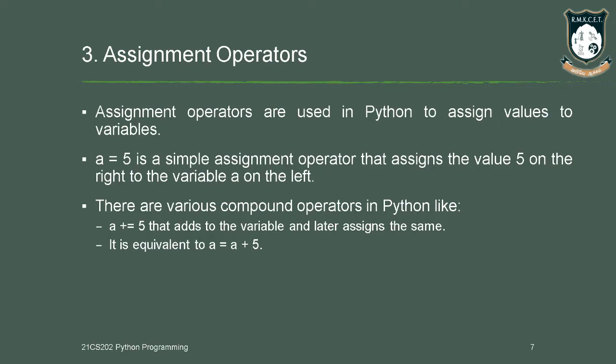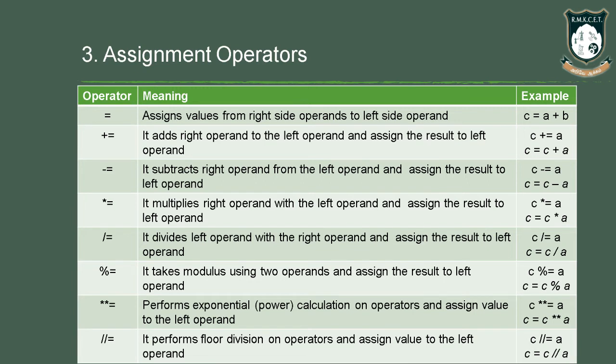So we are shortening the expression. Instead of writing a equal to a plus 5, we reduce it to a plus equal to 5. The various operators under the assignment operator category include: equal to, which assigns the operand from the right hand side to the variable; plus equal to, which is equivalent to c equal to c plus a.